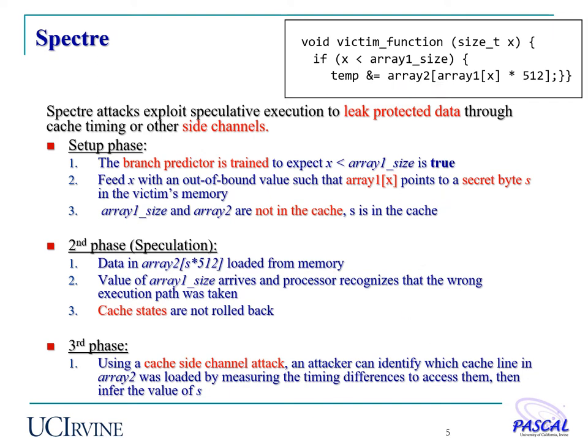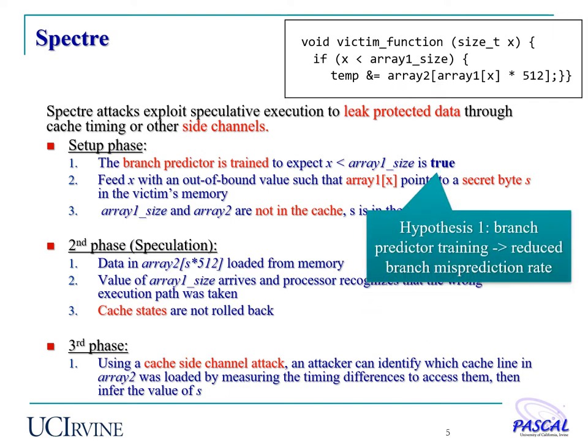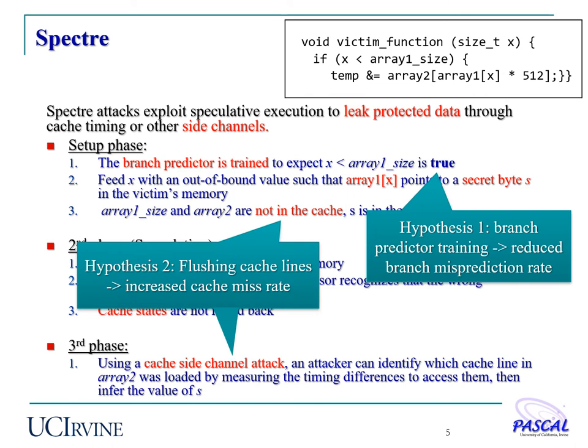By analyzing this attack, we have formulated two hypotheses. The first is that the attacker will need to train the branch predictor, which will reduce the branch misprediction rate. The second is that it will also need to flush data from the cache, which will increase the cache miss rate.